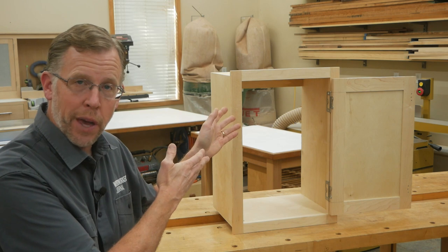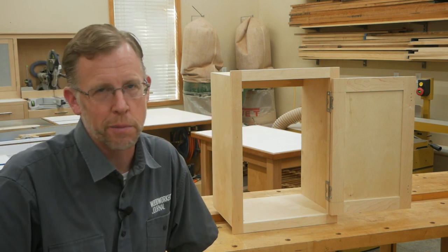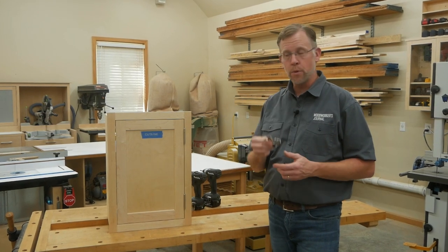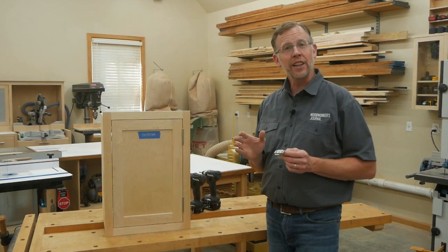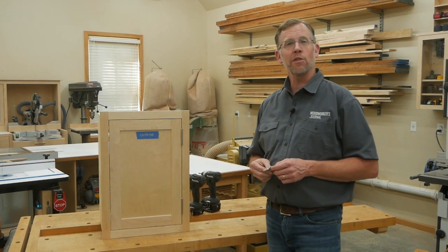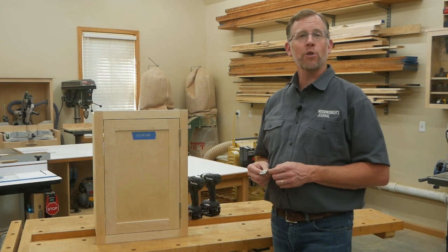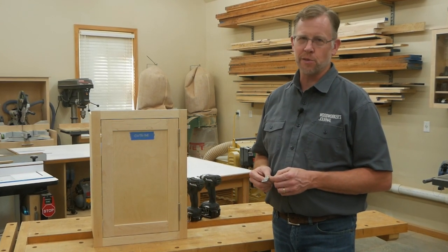So that's how you install no-mortise hinges in either wrap-around or flat leaf styles. You'll get that classic butt hinge look from the outside the easy way. I'm Chris Marshall with Woodworkers Journal Magazine and Rockler, and thanks for watching.